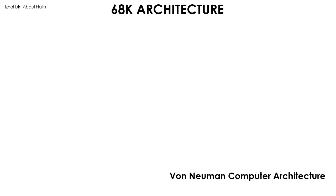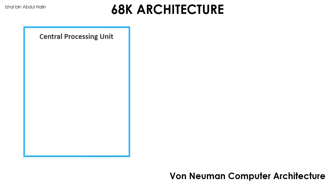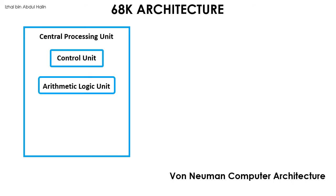Let's have a look at the block diagram of the 68K microprocessor one block at a time. The first block is called the Central Processing Unit, or CPU for short. It consists of a control block, which are circuits dedicated to synchronize the overall operation of the 68K. An arithmetic logic unit block, or ALU for short, and a register block are also part of the CPU of the 68K microprocessor.